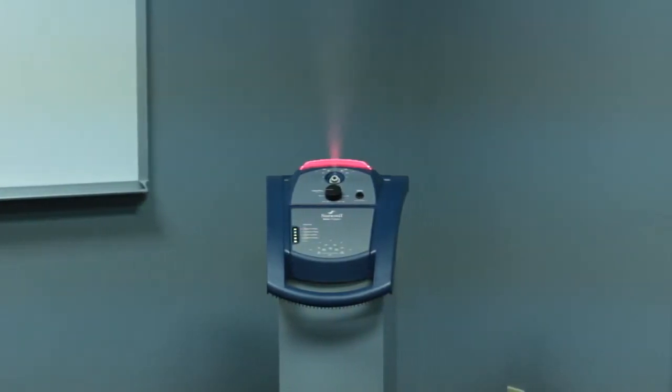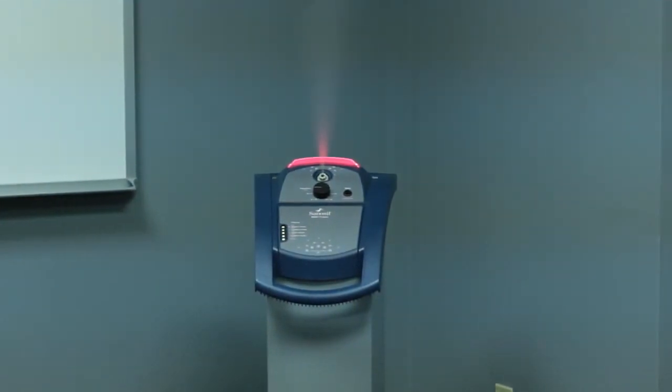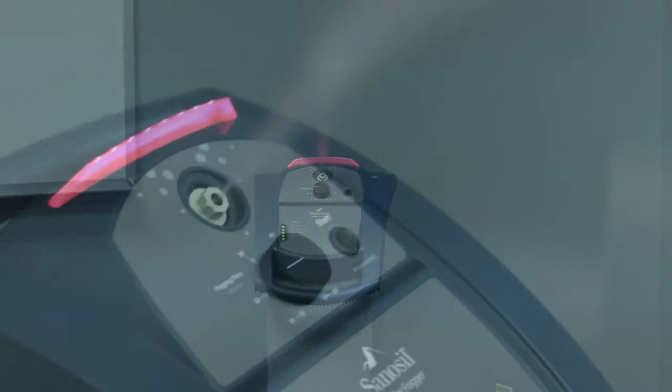The flashing red status indicator light will change to a steady red when the dispensing of atomized Sanosil begins. Make a note of the time the fogging process was started. The room cannot be reoccupied until the treatment process is complete, plus an additional 90 minutes.